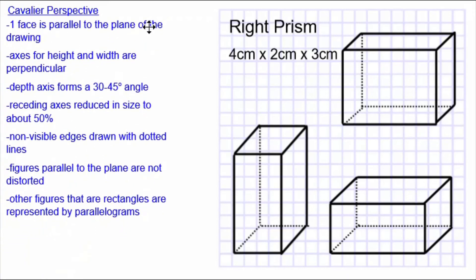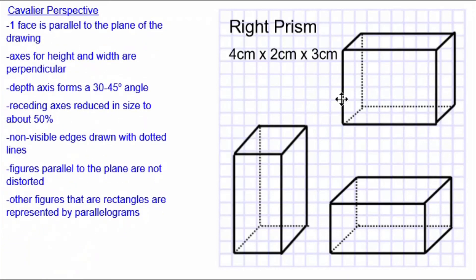When we look at the rules for Cavalier perspective, all three of these drawings of the right prism are following these rules. One face is parallel to the plane. And in fact, two faces are parallel to the plane, the front and the back. The axes for height and width are perpendicular.